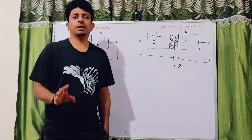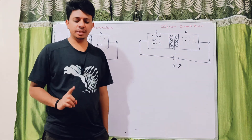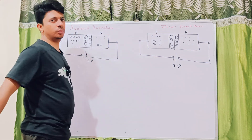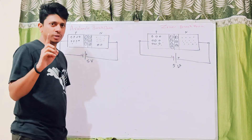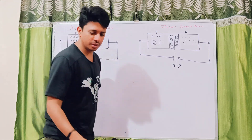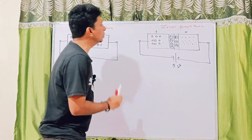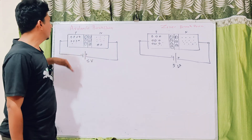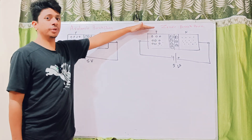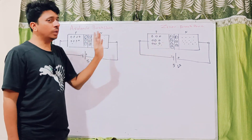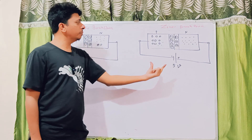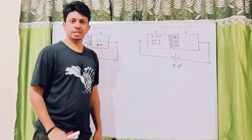Today I'm going to discuss the last concept of P-N junction. Most of the time people get confused about what is Zener breakdown or what is avalanche breakdown. There are some basic concepts, very minute concepts, which you must remember. First of all, listen carefully: whether it is an avalanche breakdown or whether it is a Zener breakdown, both breakdowns will occur when your P-N junction is reverse biased.